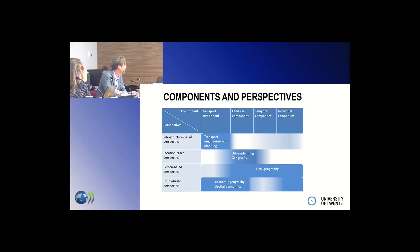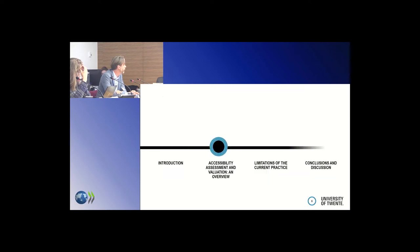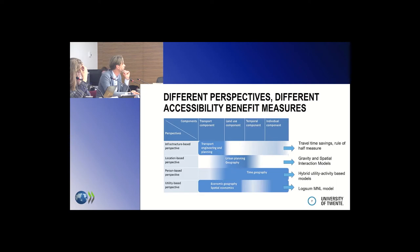If you look at the different disciplines working on accessibility, most of them focus on one, two, or maybe three of those components. There is no single overarching comprehensive method covering all components and their interactions. Transport engineers and planners are familiar with the infrastructure-based perspective — looking at time and cost. Urban planners and geographers focus on the location-based perspective. Economists have focused on the utility-based perspective, and each of those perspectives has developed tools for economic valuation of accessibility.